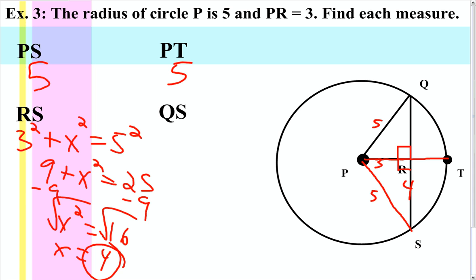Now again, since the chord is bisected, that means the other side is also 4, which now tells us that the entire segment QS is 8.